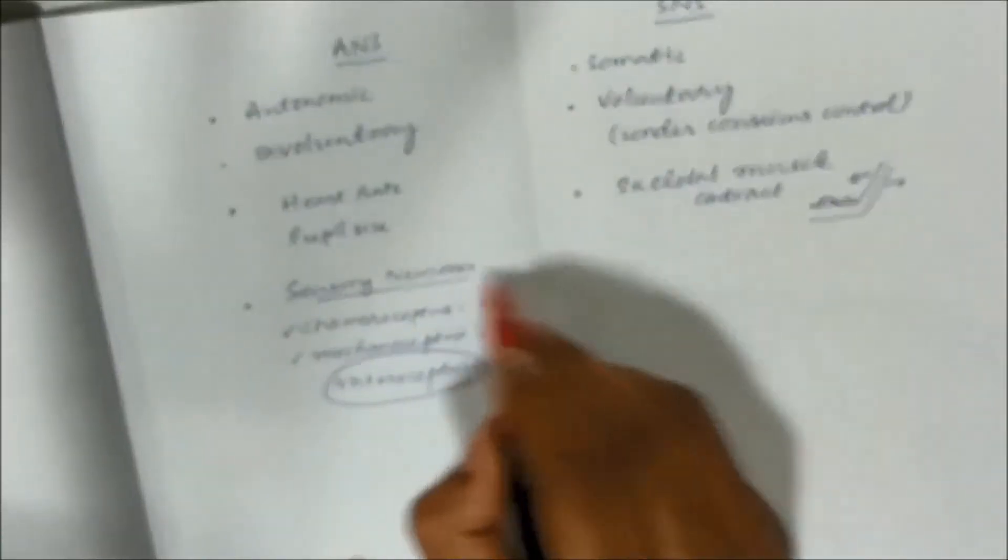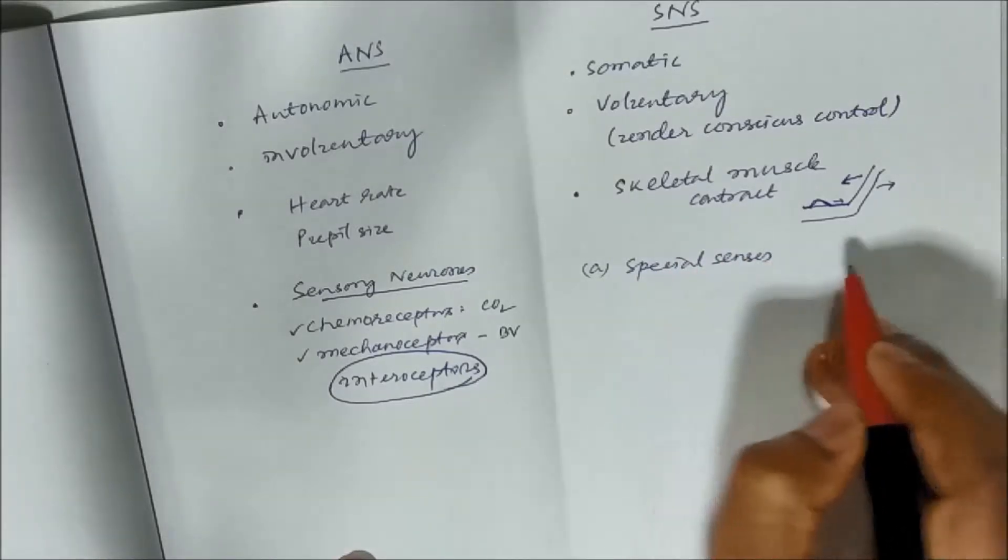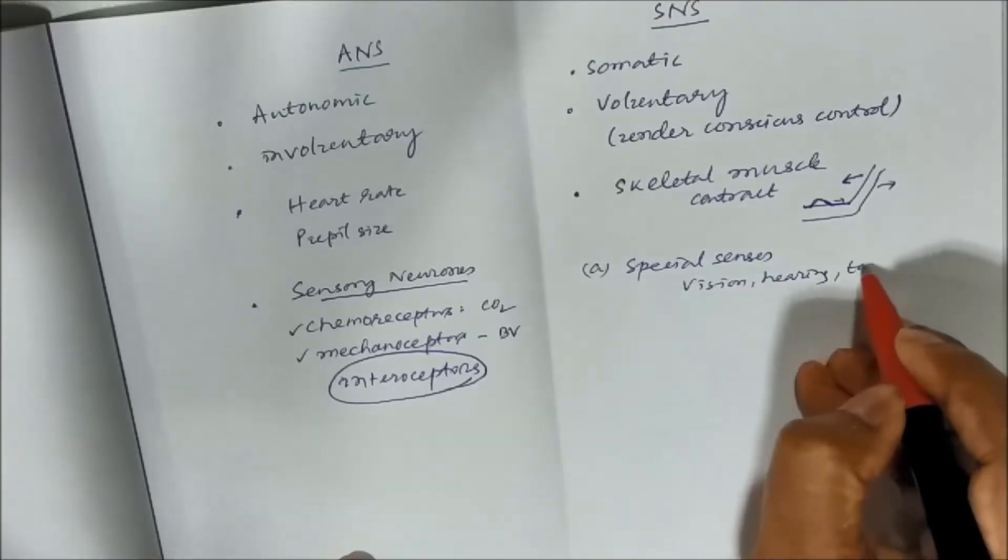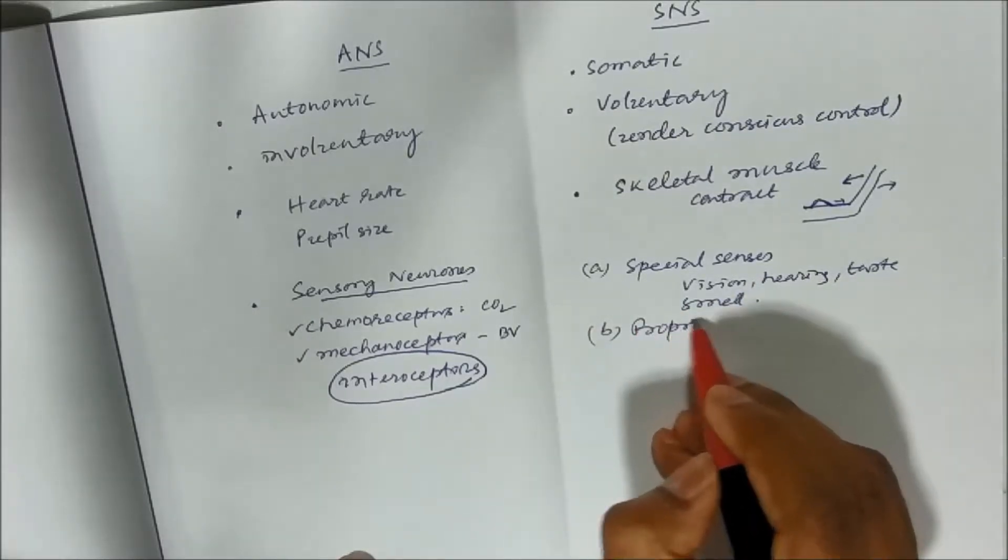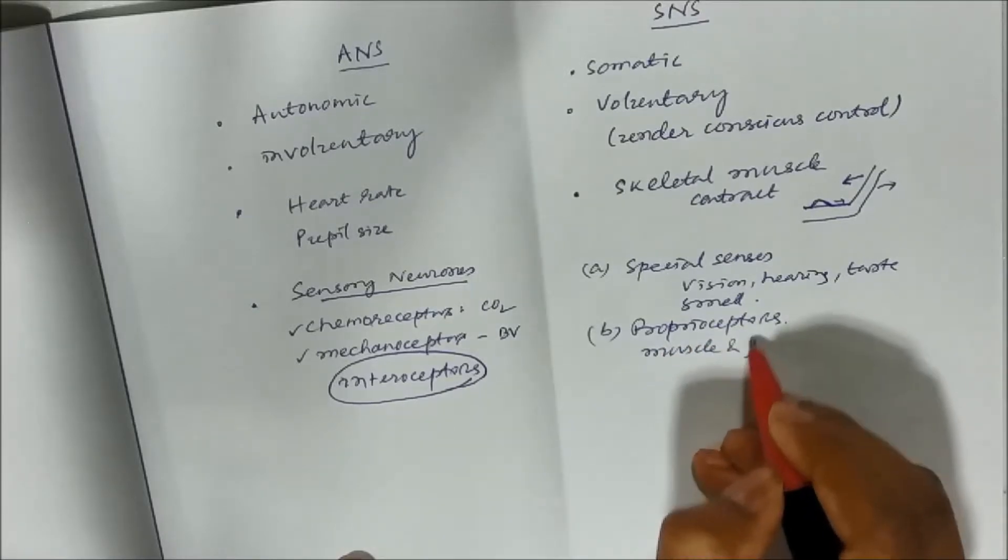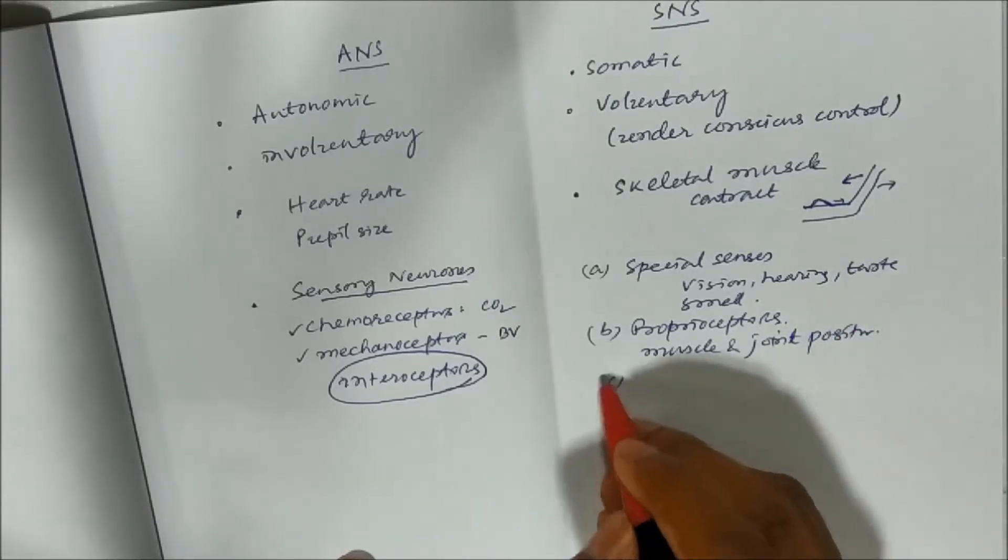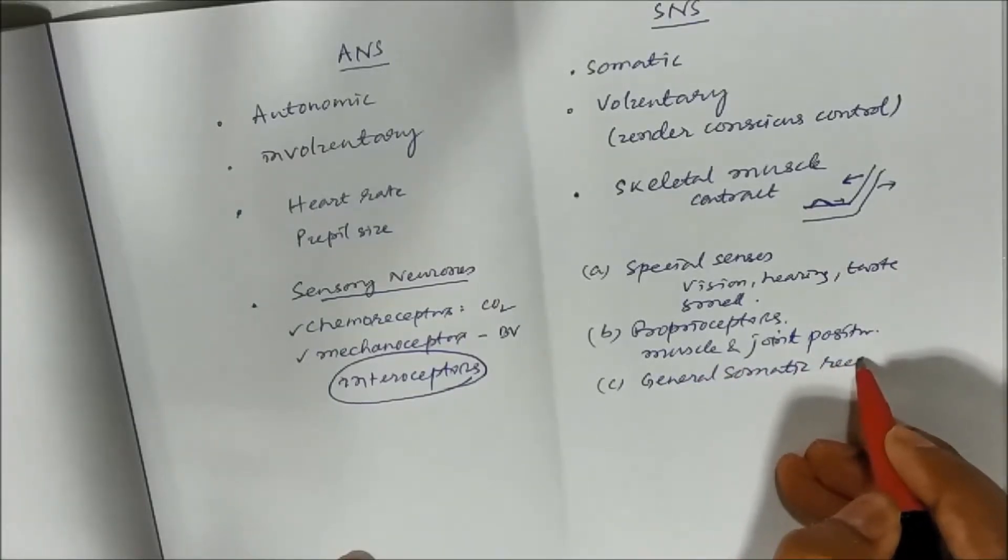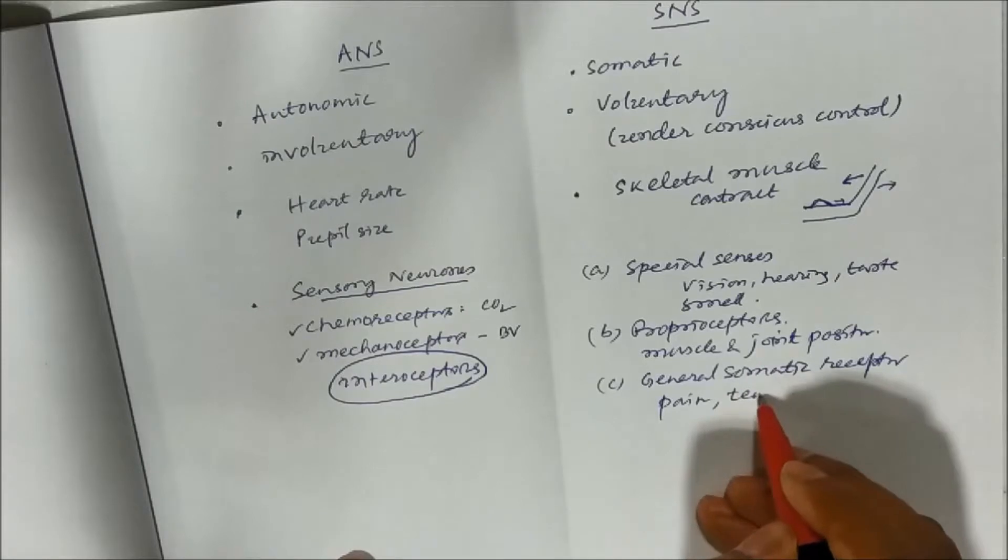Whereas in this case, SNS, these sensory neurons originate from special senses like vision, hearing, taste, smell. Then general proprioceptors. Proprioceptors, that is your muscle and joint position. And all the general somatic receptors, that is pain, temperature, etc.